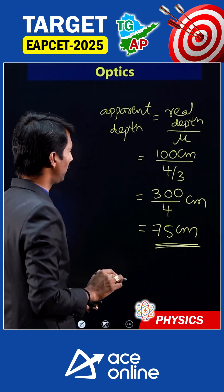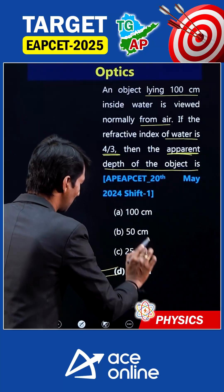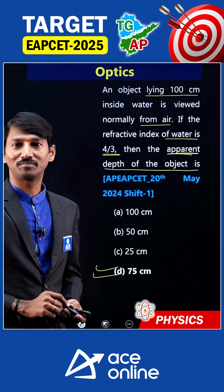This is the apparent depth — 75 cm. The answer is the fourth option. Subscribe to AS Online.